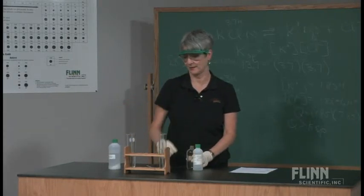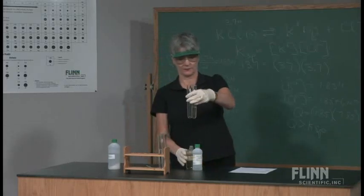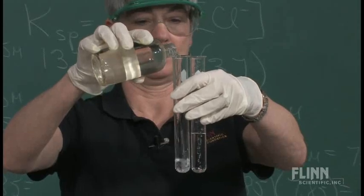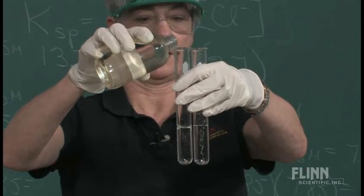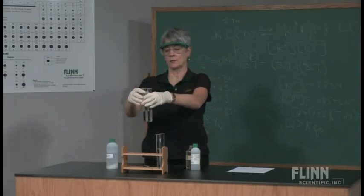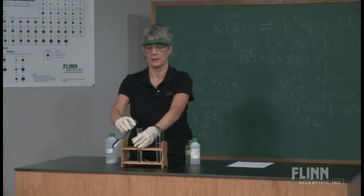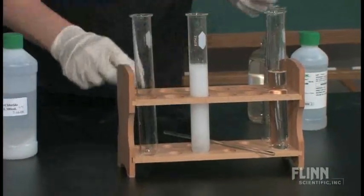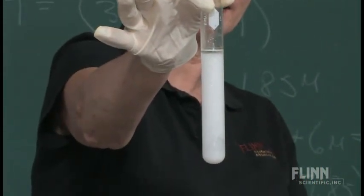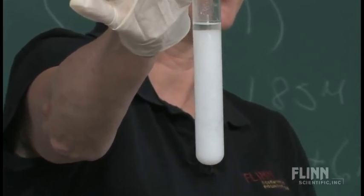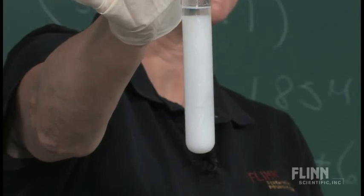All right, and if we've got equal volumes and I mix them—I don't even have to stir that—you see all the excess potassium chloride settling out, because we've exceeded the solubility product at 25 degrees.